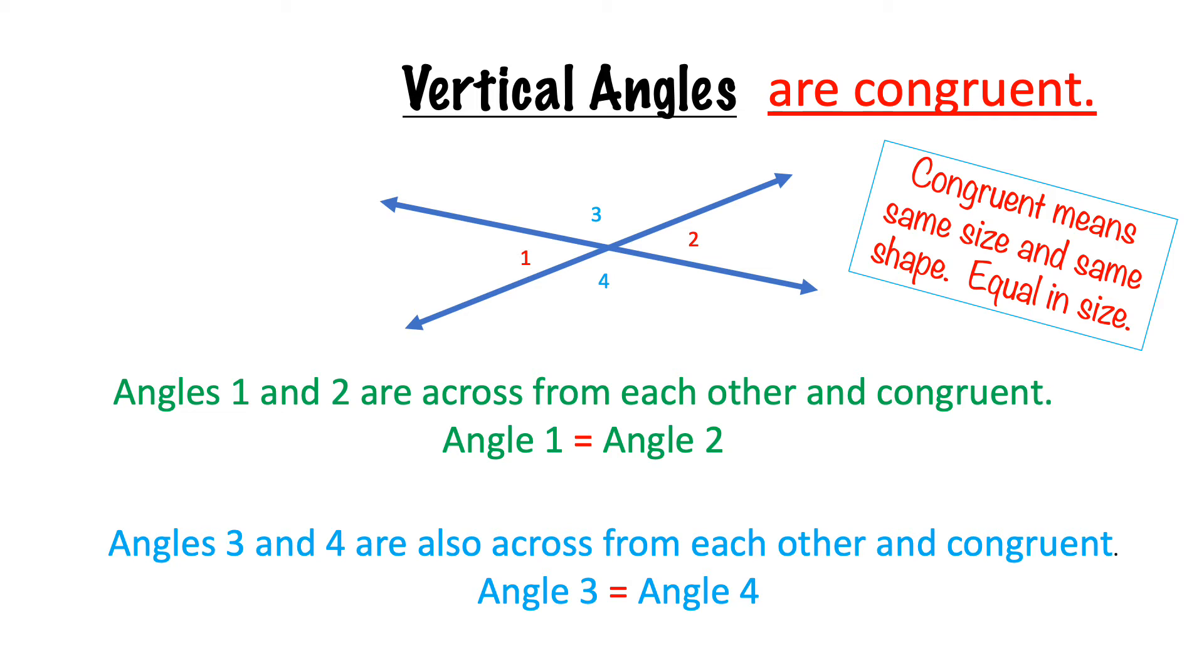So if angle one were 70 degrees, angle two would also equal 70 degrees. If angle three was 110 degrees, angle four would also be 110 degrees.